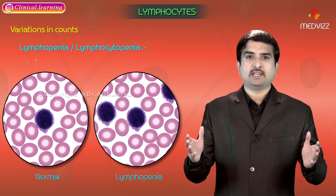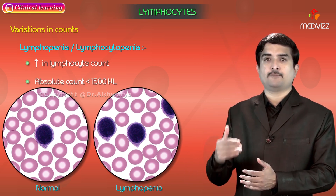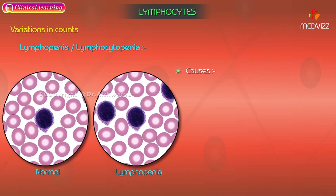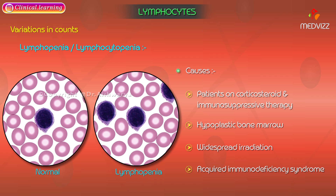Lymphopenia, or lymphocytopenia, means a decrease in lymphocyte count where the absolute lymphocyte count is less than 1500 per microliter. Causes include patients under corticosteroid or immunosuppressive therapy, hypoplastic bone marrow, widespread irradiation, and acquired immunodeficiency syndrome (AIDS). In all these conditions, the decreased absolute lymphocyte count is referred to as lymphopenia.